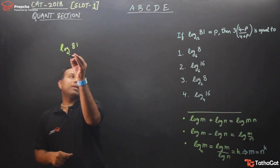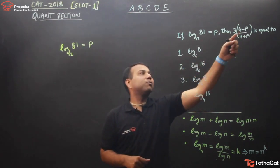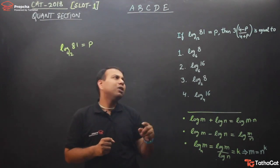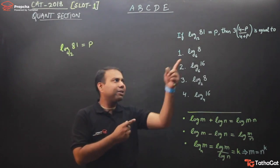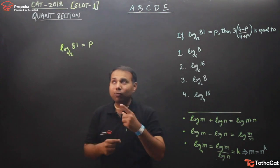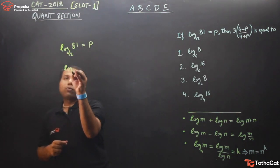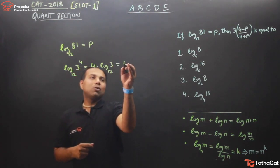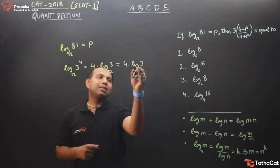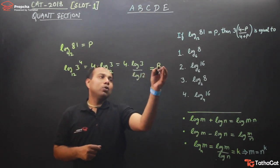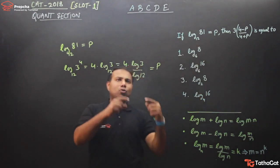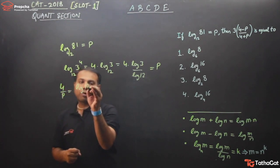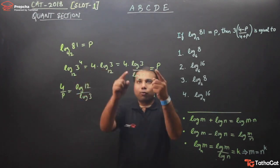Log of 81 to the base 12 equals p, and I want to find the value of (4 − p)/(4 + p). This expression is reminiscent of componendo and dividendo. So if I can find 4/p, I can get the expression easily. Since 81 = 3⁴, this becomes 4·log 3 to the base 12, which equals 4·(log 3 / log 12). This equals p, so 4/p = log 12 / log 3.